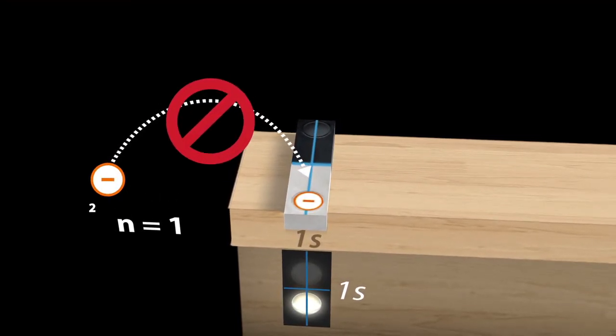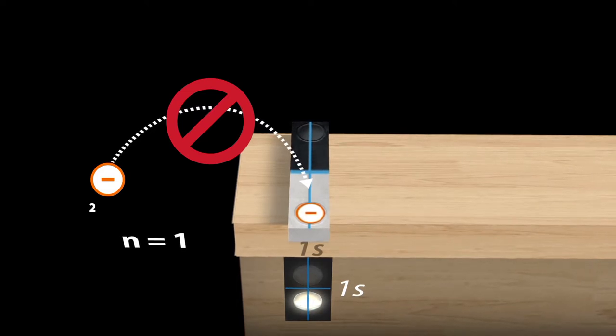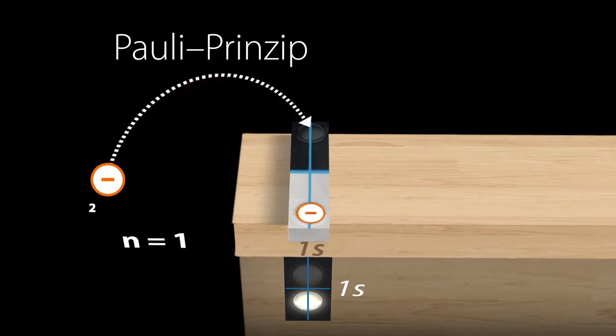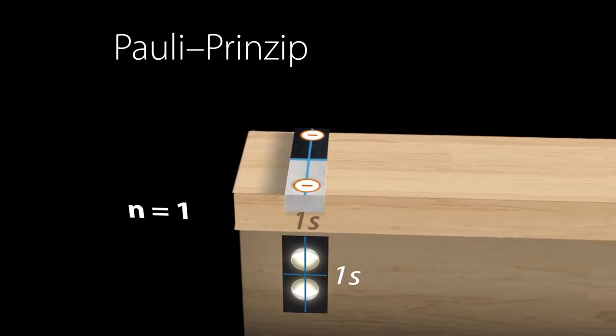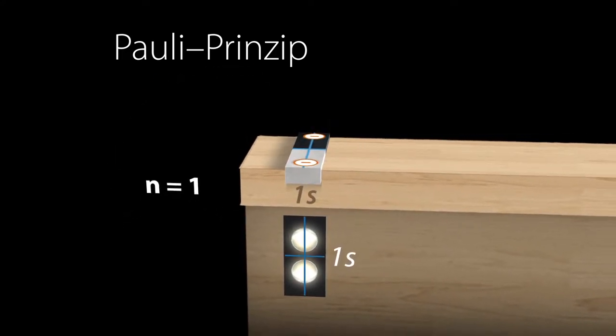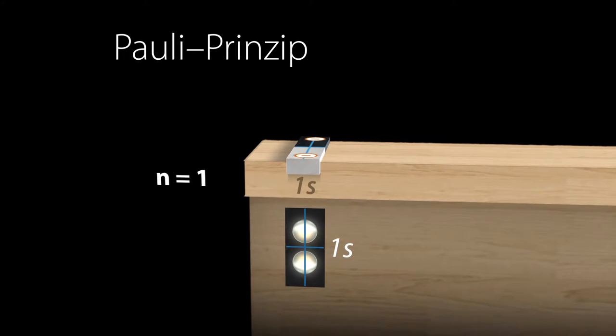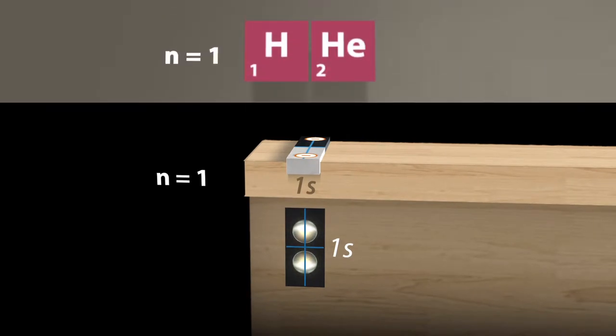According to the Pauli exclusion principle, a second electron cannot occupy exactly the same state as the first. When there are two electrons in the 1s orbital, they occupy two different spin states, up and down. We have thus filled the first shell. The corresponding element with two electrons is the noble gas helium.